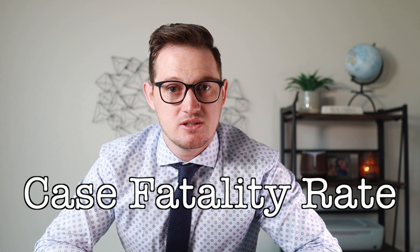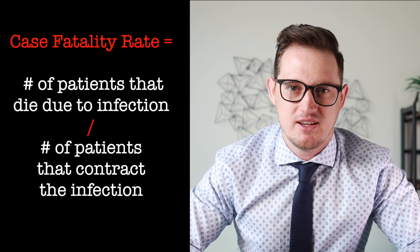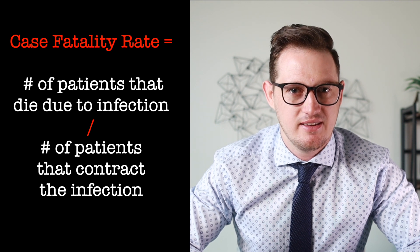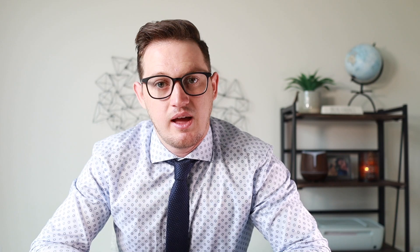One more topic before we get onto the role of vaccines is the concept of case fatality rate, which is defined as the proportion of people that die as a result of becoming infected. It's calculated by dividing the number of people that die from the infection by the total number of people that get the infection. However, the case fatality rate is very difficult to calculate accurately because of challenges associated with detecting the infection in everyone that has it, as well as determining whether the infection was the cause of death in a specific person.